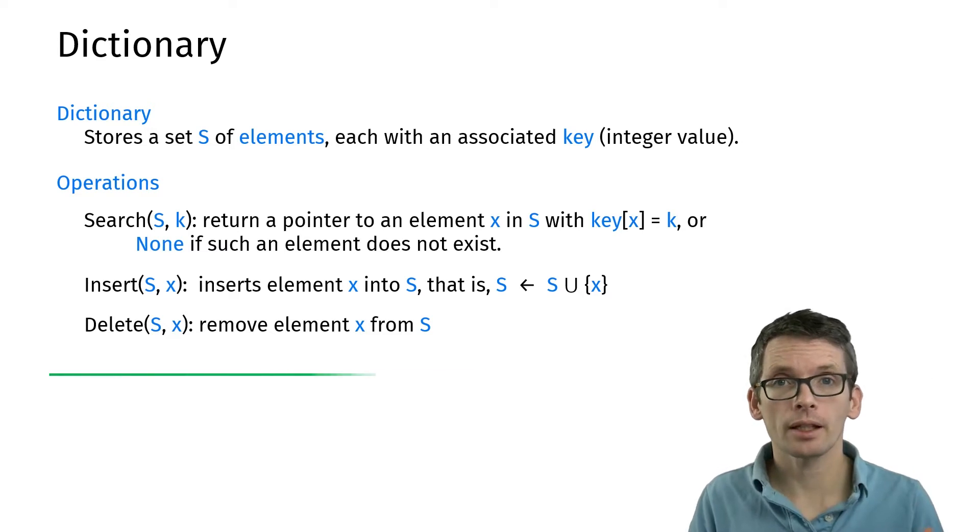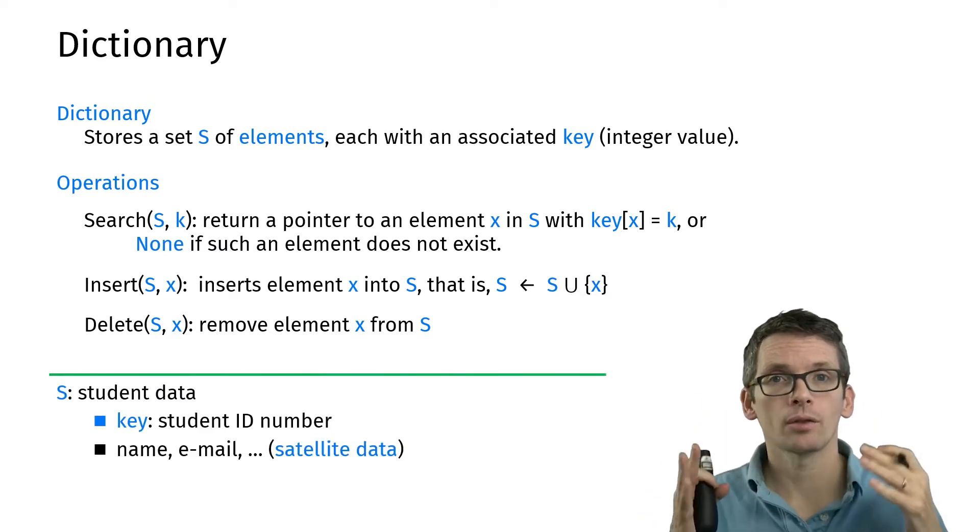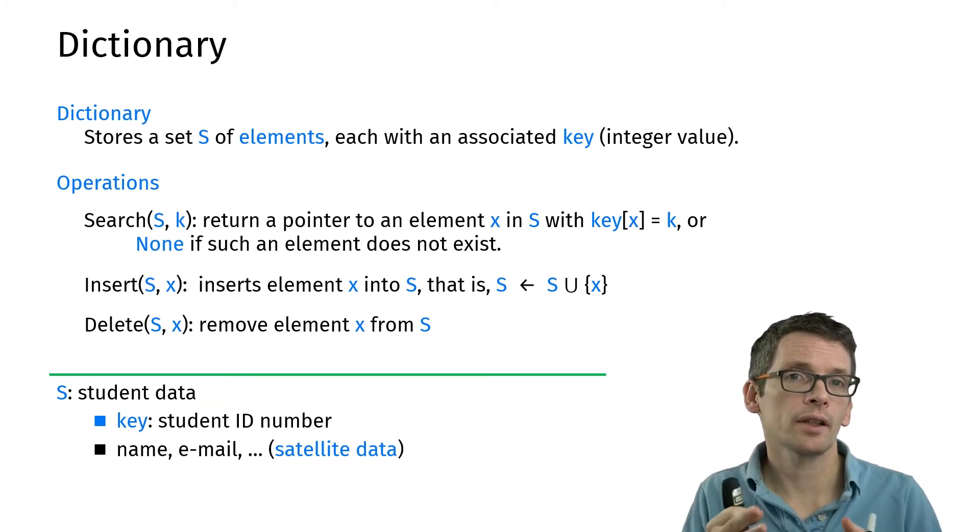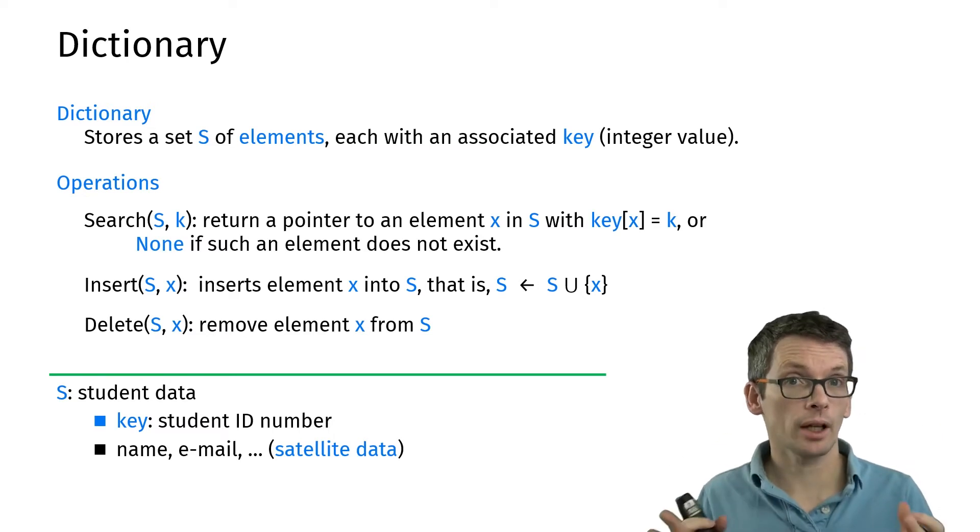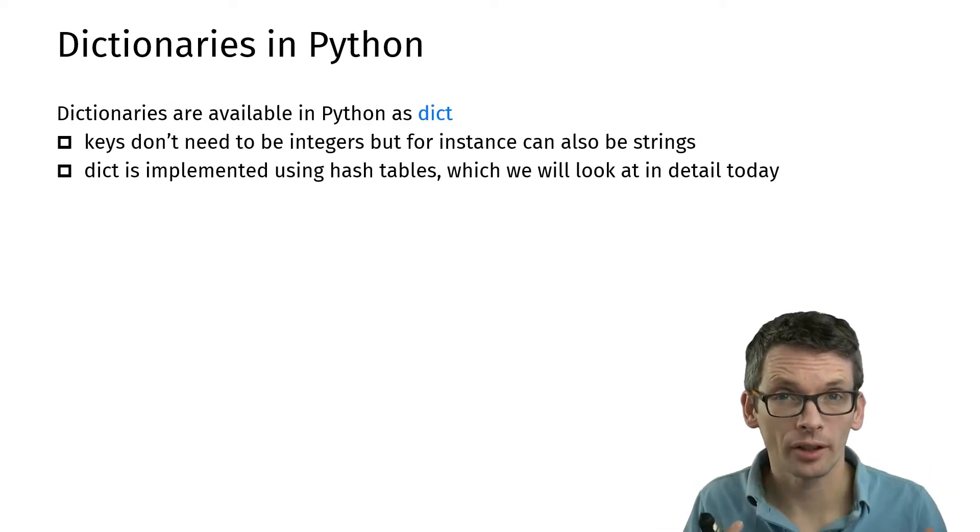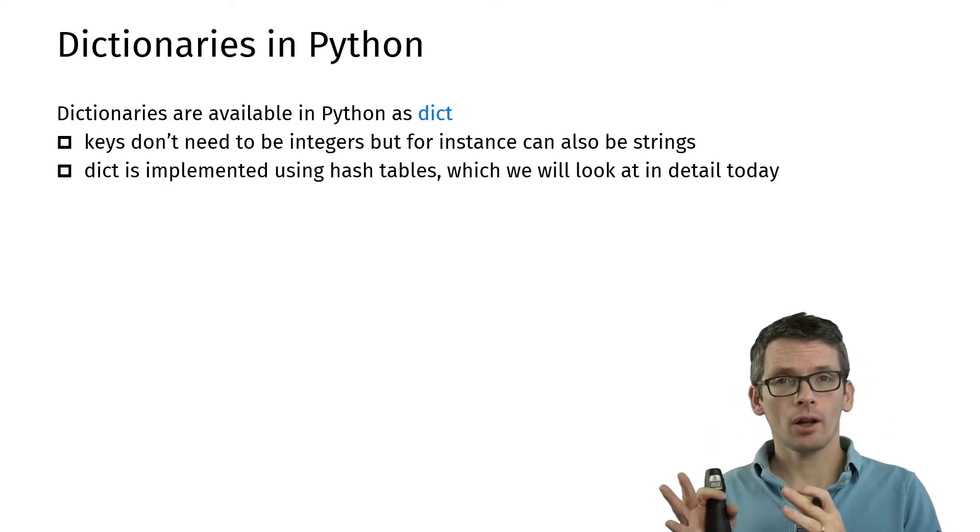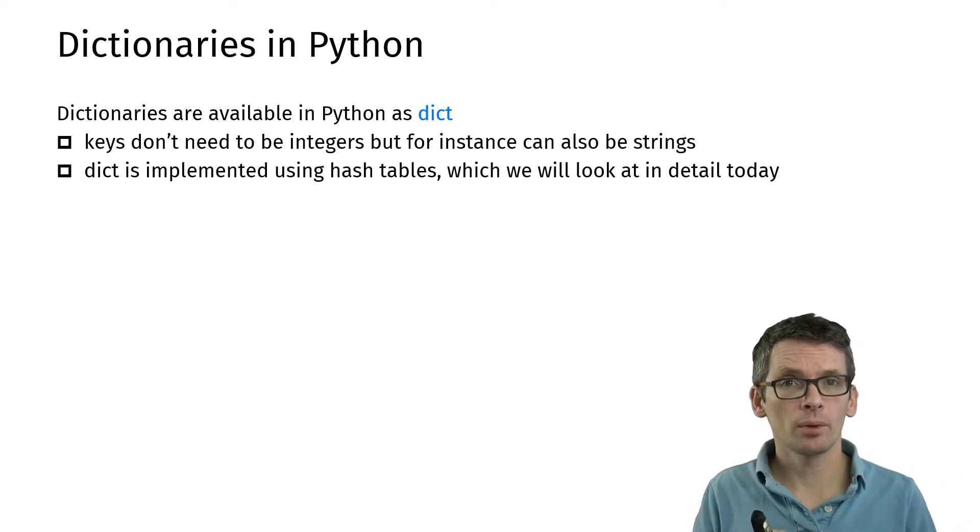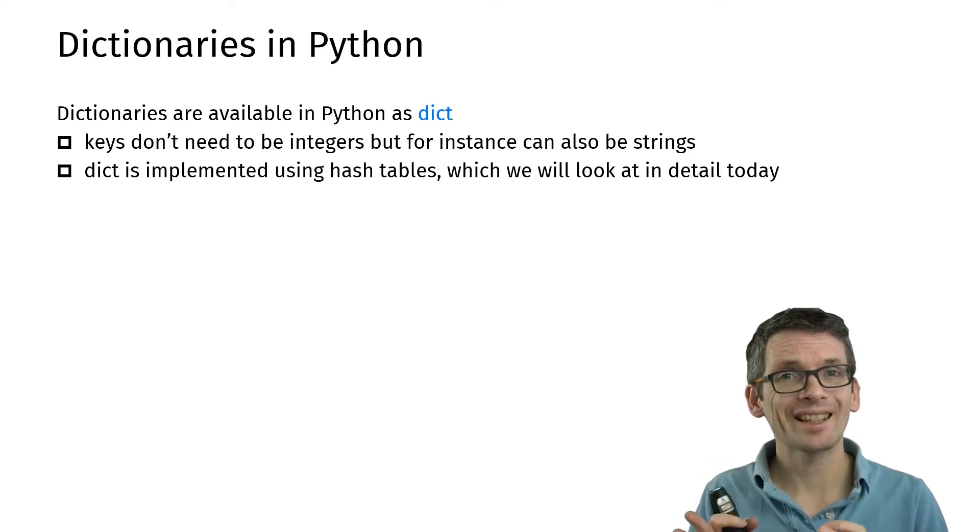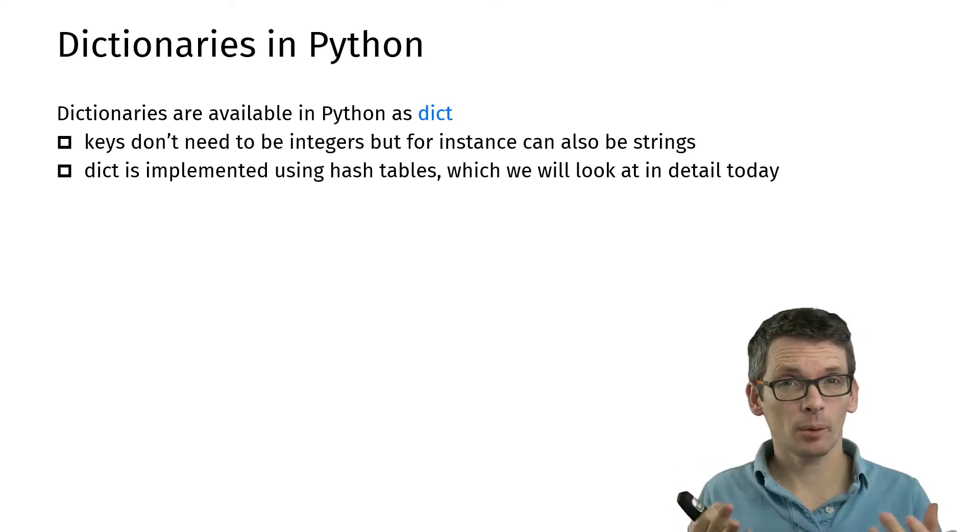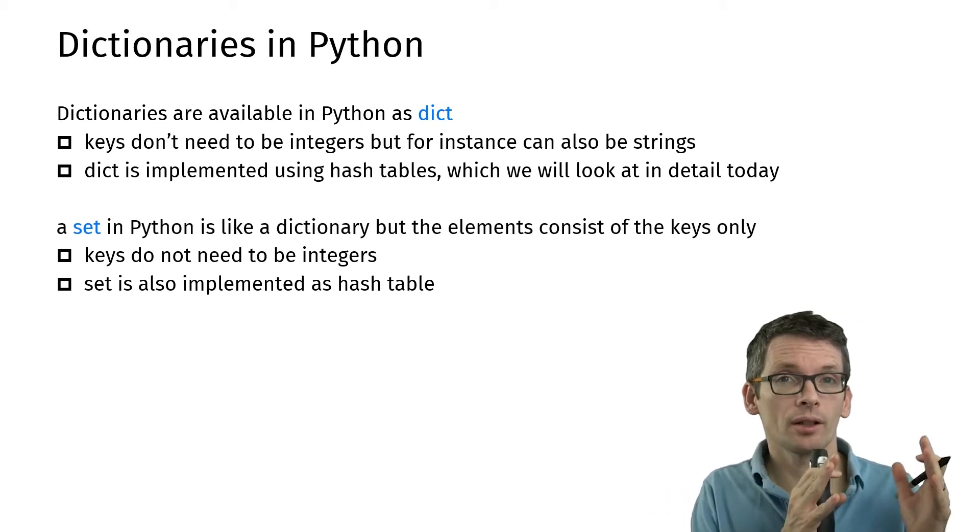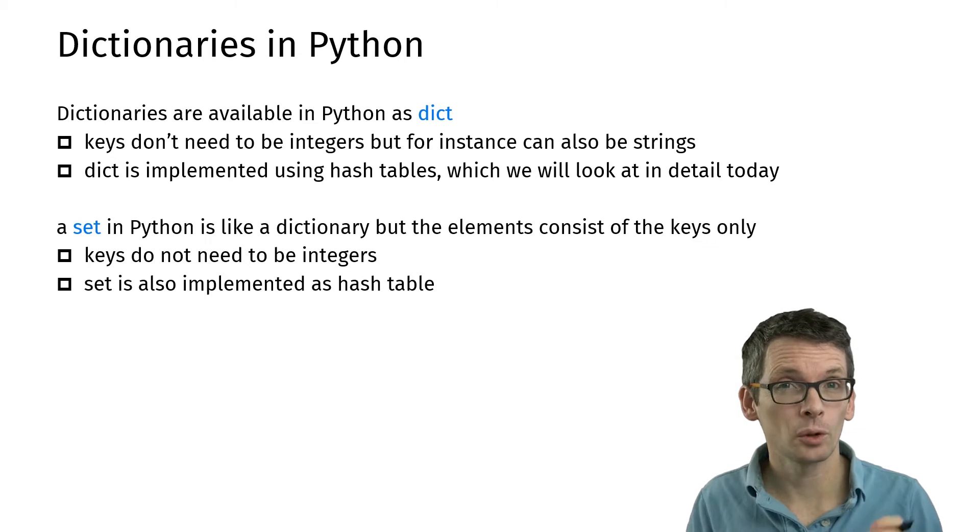As a running example, assume you have student data where the key is a student ID number, and then you would have additional data like name, email address, whatever. When we program, we use dictionaries a lot. In Python, a dictionary data type is called dict, like dictionary. Note that the key does not need to be an integer, and very often we use strings as keys. Dictionaries are indeed implemented using hash tables. There's also the data type set. Sets are simply dictionaries without associated data and are also implemented using hash tables.